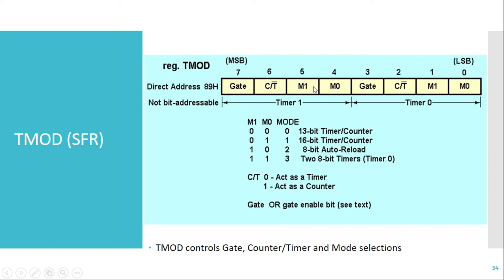The next bits are M1 and M0, which are used to decide the mode of operation of the timer. There are four different modes available — for Timer 1 we have three modes, and for Timer 0 we have four modes.